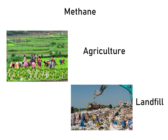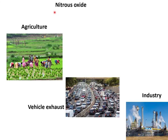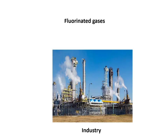Animals like goat, cow, and sheep are sources of methane. Nitrous oxide, also called laughing gas, has its main sources in the agriculture field and vehicle exhaust industry. Fluorinated gases come mainly from industrial effluents.